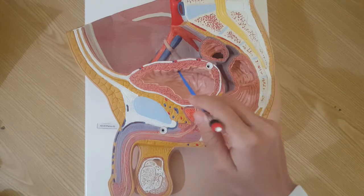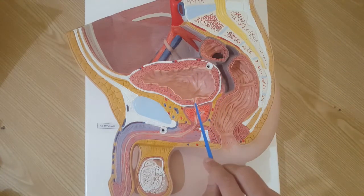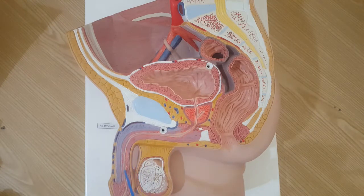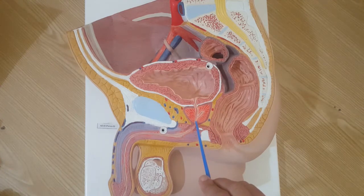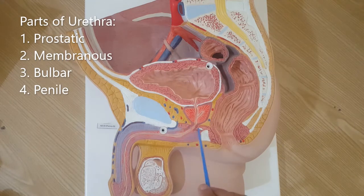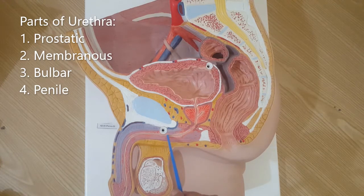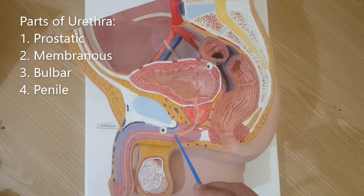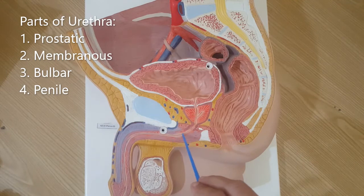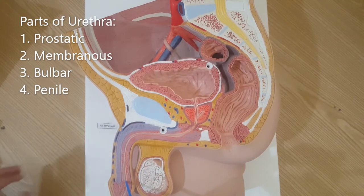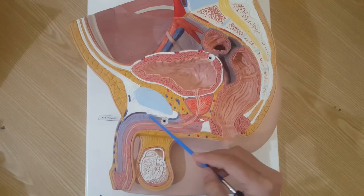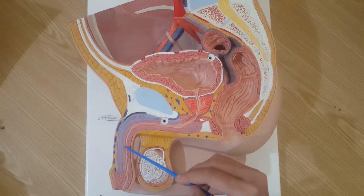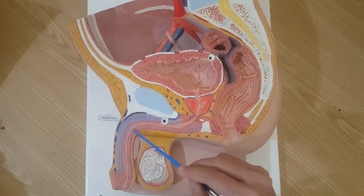This is the cavity of the urinary bladder; this is the urethra arising from the urinary bladder. The urethra has four parts. This is the cut section of the prostate — the urethra passing through the prostate is called the prostatic urethra. This muscular layer is the urogenital diaphragm; the urethra passing through it is called the membranous urethra. Then we have the initial dilated portion of the penile urethra called the bulbar urethra, and the rest is called the penile urethra, ending at the external urethral meatus.